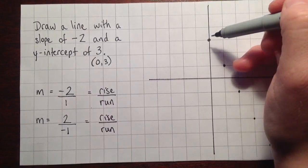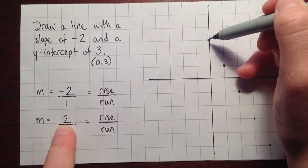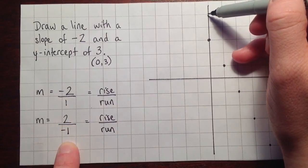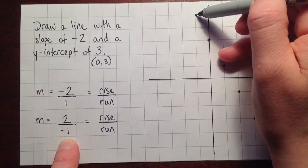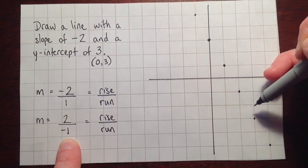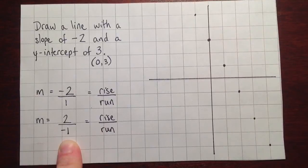Just whichever you prefer. So in this case, that would mean that we'd start at the beginning again. We'd do a rise of 2, which we'd go up 2. And then a run of negative 1, which we'd go to the left. And if we look at that, that makes perfect sense. It's the same thing. It gives us a different point, but those are all on the line there.